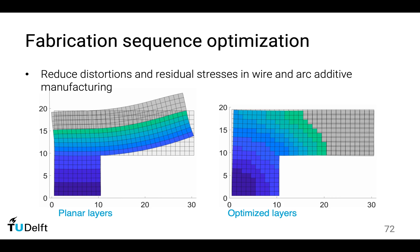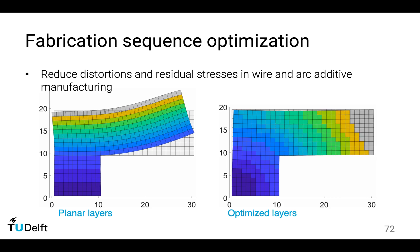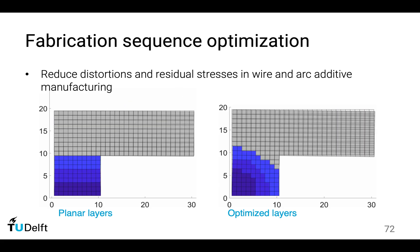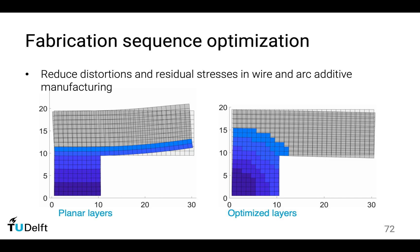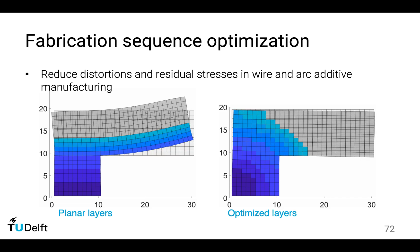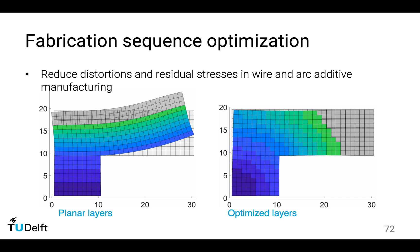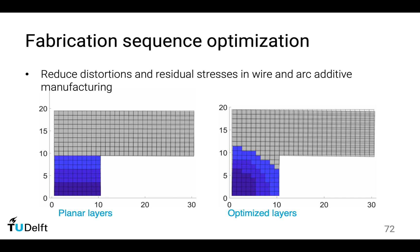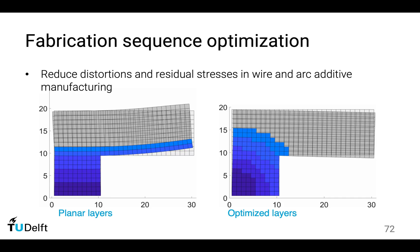This animation is showing on the left-hand side we are using planar layers, and because of the residual stresses during the fabrication process, the distortion is very big. But if we make use of curved layers — these curved layers are optimized — by optimization we could reduce the distortion to an almost invisible extent.